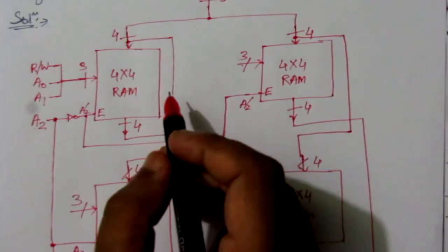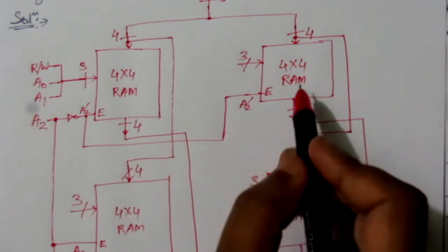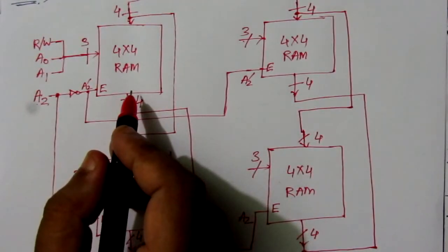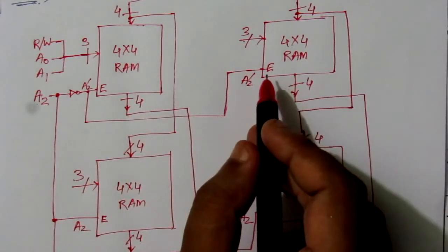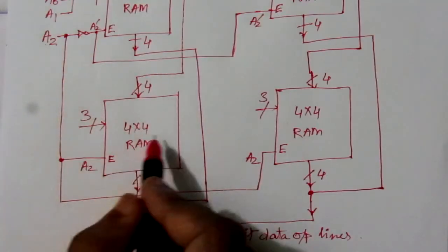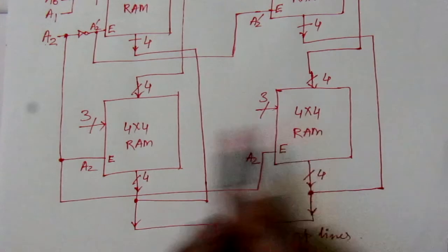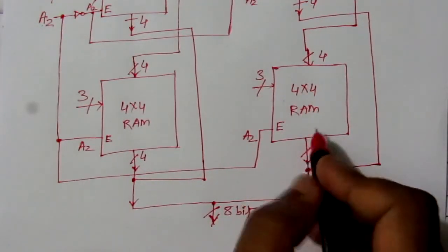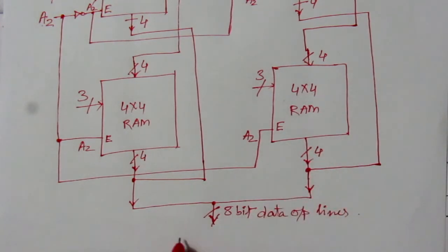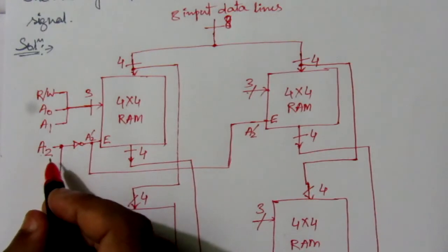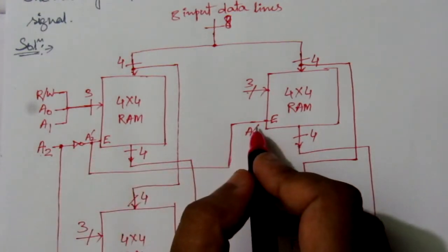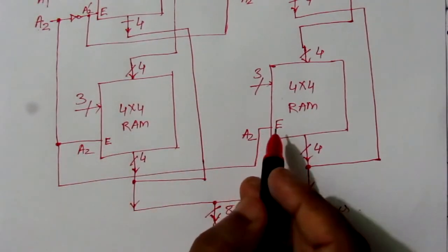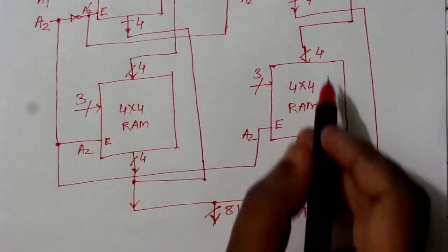For a read operation with A2 equal to zero, the upper two RAM units are disabled and the lower two are active. The lower RAM units output their stored data: the four most significant bits come through one path and the four least significant bits through another, producing an eight-bit data readout. When A2 equals one, A2-bar becomes zero, activating the upper two RAM units and disabling the lower two.